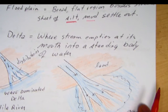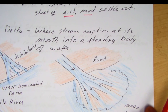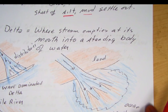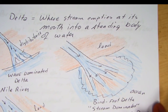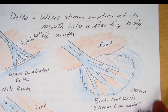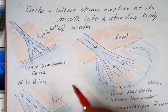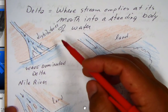And deltas. A delta is where a stream empties at its mouth into a standing body of water. There are basically three types of deltas, and the book mentions this typical delta here.